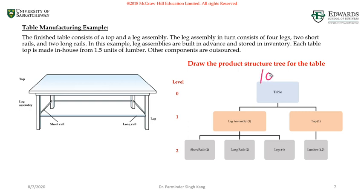As we know, we need one leg assembly for one table. The number of tables I need to manufacture is 10, so I need a total of 10 leg assemblies.